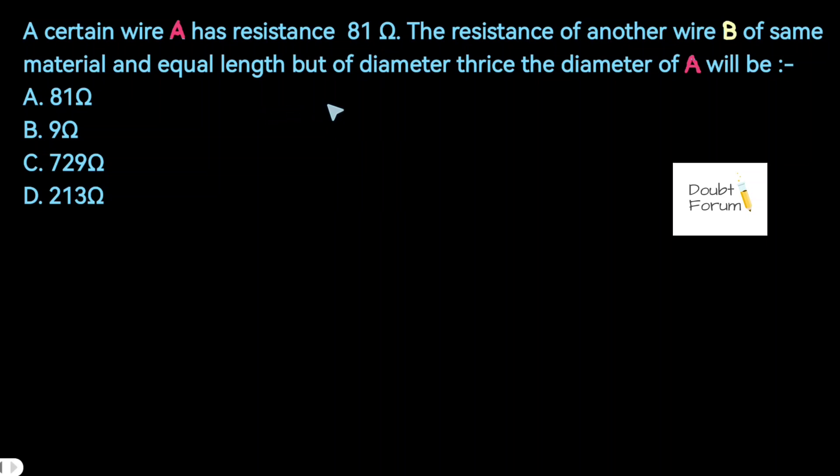Hello friends, I welcome you all to Doubt Forum. In this question, there is a wire A which has resistance of 81 ohm, and there is another wire B which is made up of same material and equal length as wire A, but the diameter of wire B is 3 times the diameter of wire A.